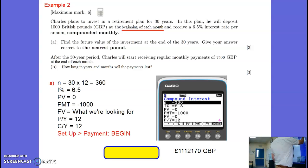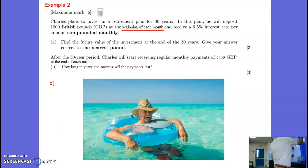Moving on to part B. After the 30 years, Charles will start receiving regular monthly payments of £7,500 at the end of each month. So if he's receiving £7,500, he's doing very well for himself. He's got plenty of money, and he can have a pretty good retirement here.